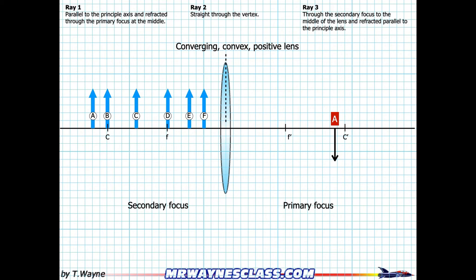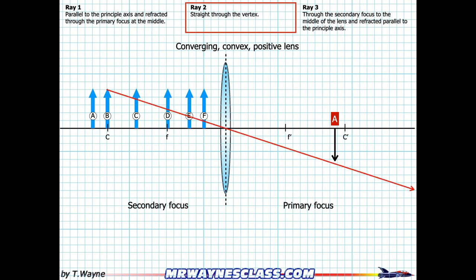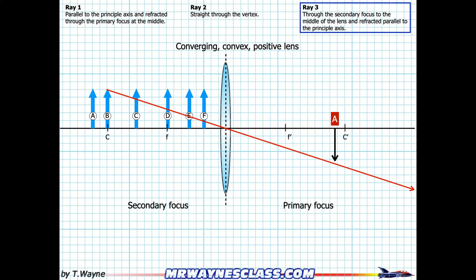For B, I've got my approximation line and I'm going to use two different rays. Ray one goes through the vertex — from B straight through the middle of the lens. Ray three goes through the secondary focus to the middle of the lens, then refracts parallel to the axis. So it goes through the secondary focus until it hits the lens line in the middle, and once it hits there it goes parallel. Where the two cross, that's the tip of B, and the bottom of B is on the axis.